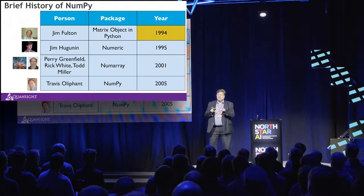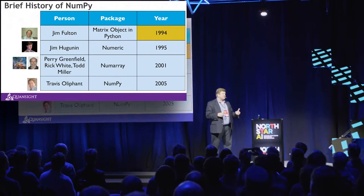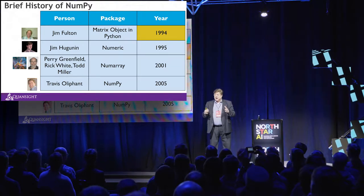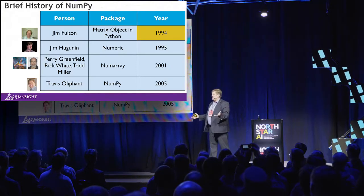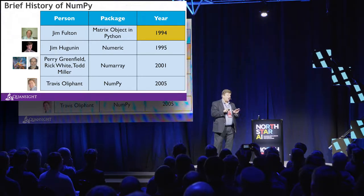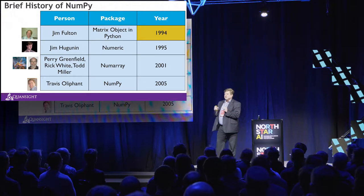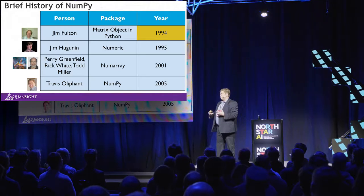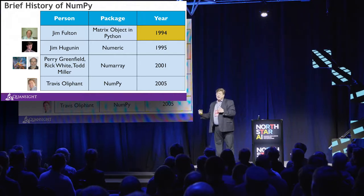SciPy is actually where I started, but at the time there were multiple bifurcations happening in the ecosystem. In the 2001 timeframe, a new library called Numarray was emerging alongside Numeric, which Jim Huguenin and others wrote. I saw this fragmentation — the same fragmentation that exists today between TensorFlow, CNTK, MXNet, and PyTorch. That's what inspired me to write NumPy: to bring them together and create a unified platform that everybody could build on top of, and see an explosion grow around it. That was in 2005.